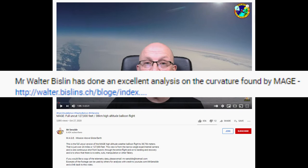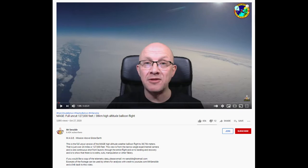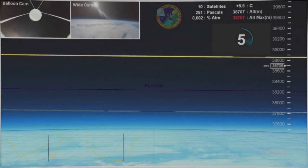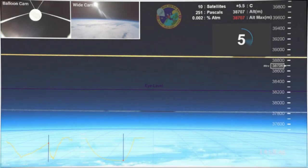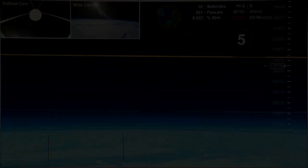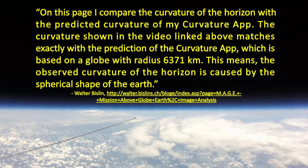I'm not going to click on the link because it wouldn't surprise me if they try to hit me with a copyright issue, but Walter's website shows pictures that seem to indicate that the alleged curvature filmed by Mr. Sensible matches the supposed curvature of the Earth perfectly. According to Ball Earther Walter, on this page, I compare the curvature of the horizon with the predicted curvature of my curvature app. The curvature shown in the video linked above matches exactly with the prediction of the curvature app, which is based on a globe with radius 6,371 kilometers. This means the observed curvature of the horizon is caused by the spherical shape of the Earth.